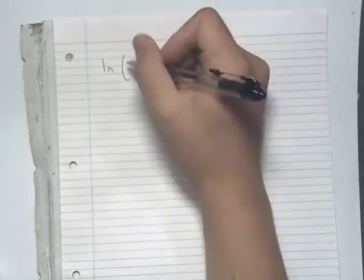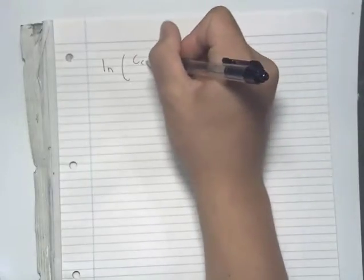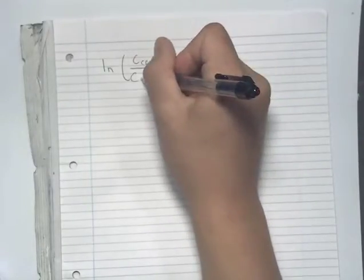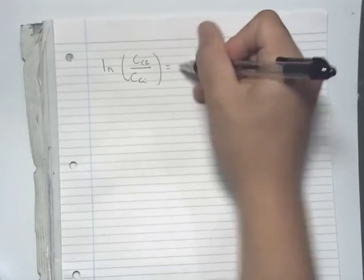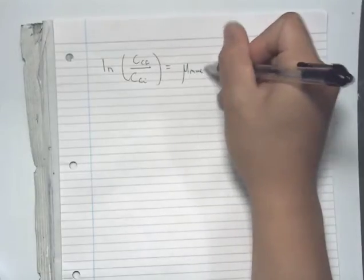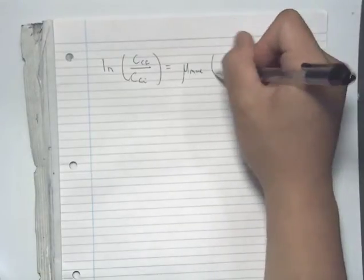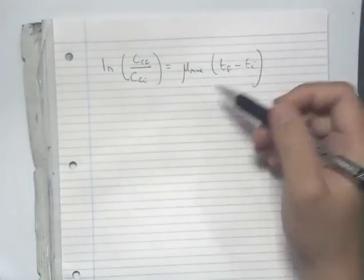Part B of the question asks us to find the population size after 25 days. We can find this using the relationship we derived in part A, which relates concentration and time: the final concentration over the initial concentration is equal to mu_max times the time component (t_final minus t_initial).